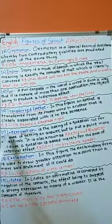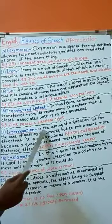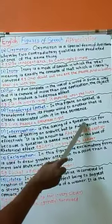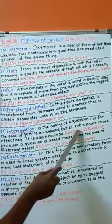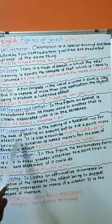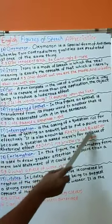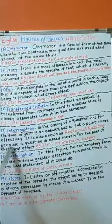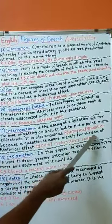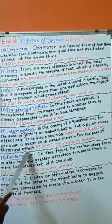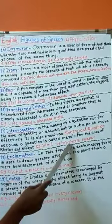Next, Interrogation. Interrogation is the asking of a question not for the sake of getting an answer, but to put a point more effectively. It is also known as rhetorical question, because a question is asked merely for the sake of rhetorical effect. For example, am I my brother's keeper?